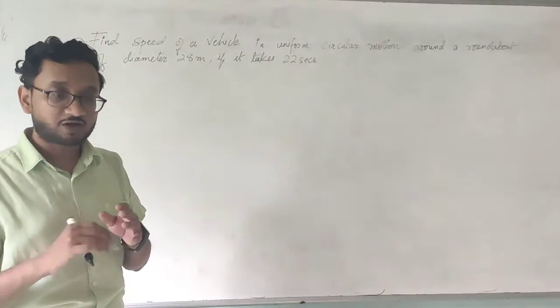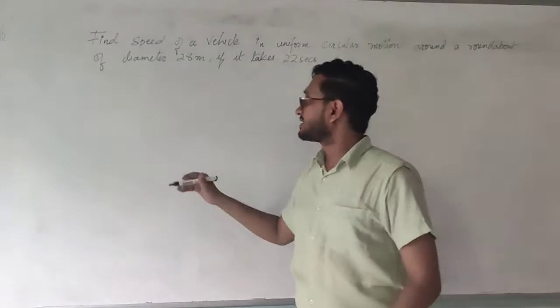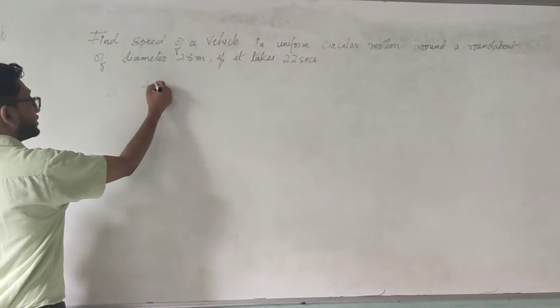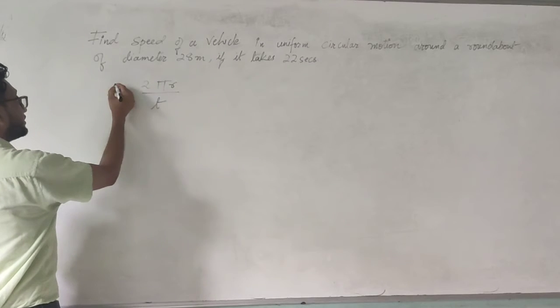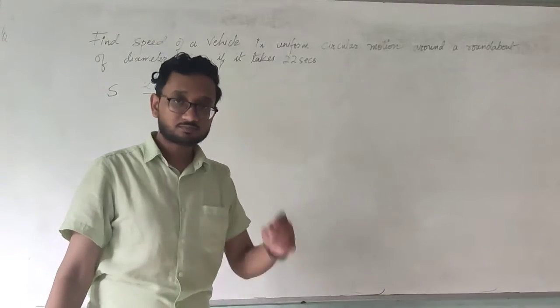So you need to find the uniform circular motion. We studied that last time that speed of an object is given by 2 pi r upon time taken if it is in uniform circular motion.